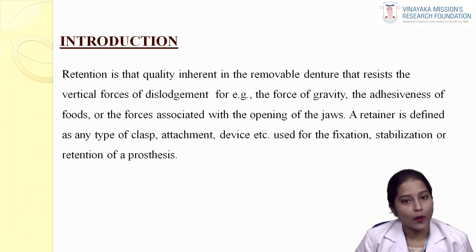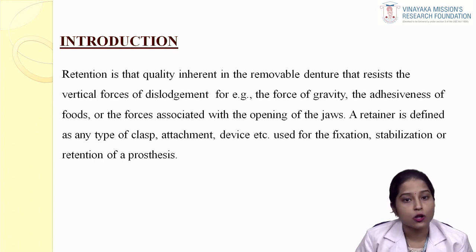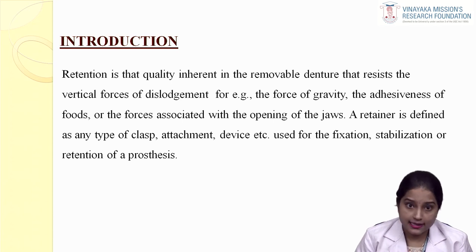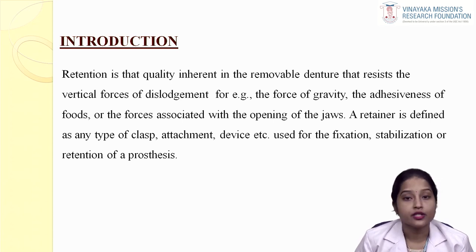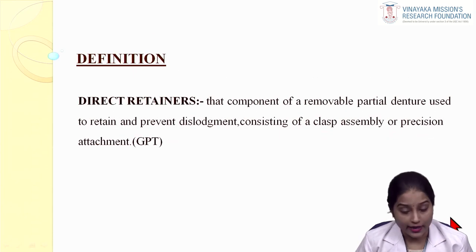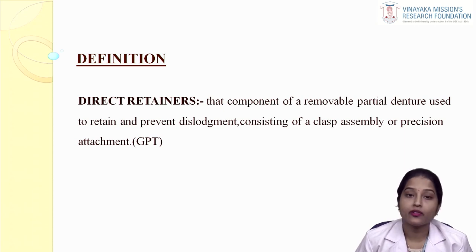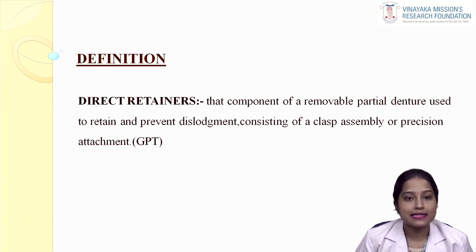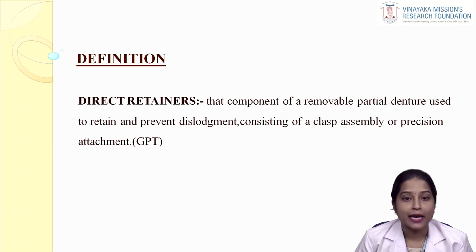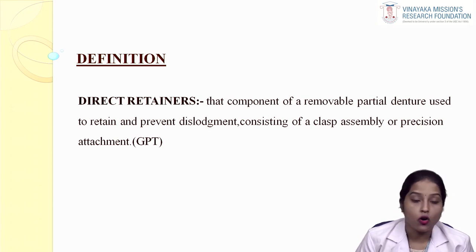Retention is a quality which is inherent in a dental prosthesis which prevents the dislodgement of the prosthesis away from the supporting tissue. This retention is provided by a direct retainer. A direct retainer is any component of a removable partial denture which is used to retain and prevent dislodgement, consisting of a clasp assembly or a precision attachment.